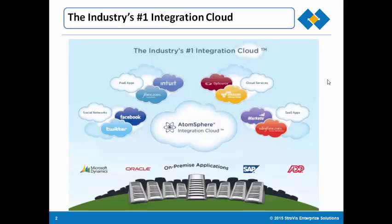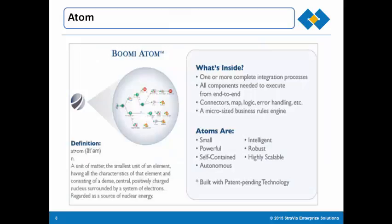Each Atom defines what is necessary for the integration. We need to be familiar with what exactly an Atom is. Atom is a lightweight dynamic runtime engine. It contains all the components required to execute your process from end-to-end, including connectors, transformation rules, decision handling and processing logic. You can deploy it behind the firewall for on-premises applications or in the cloud for SaaS applications. This handles any combination of SaaS to SaaS or SaaS to on-premises integration from one platform.